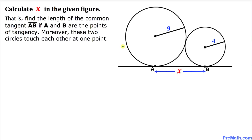Welcome to PreMath. In this video tutorial we are going to calculate the value of x in this given figure — in other words, find the length of the common tangent line segment AB, where A and B are the points of tangency and these two circles touch each other at just one point. The radius of the bigger circle is 9 and the radius of the smaller circle is 4.